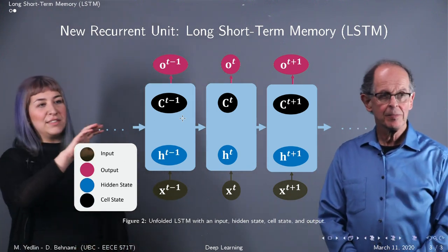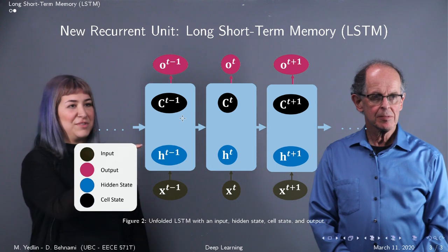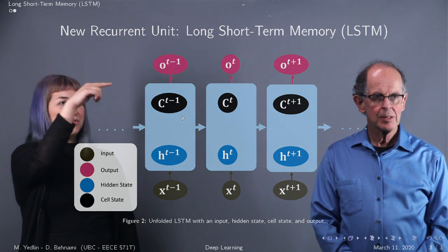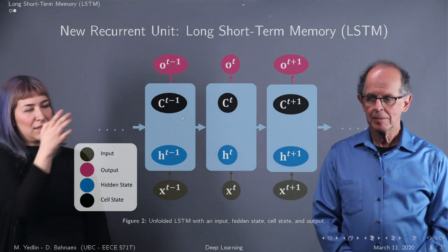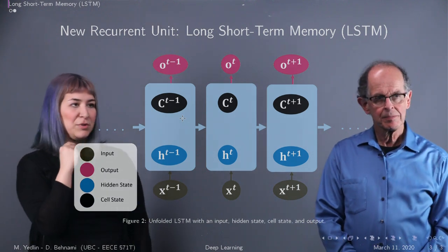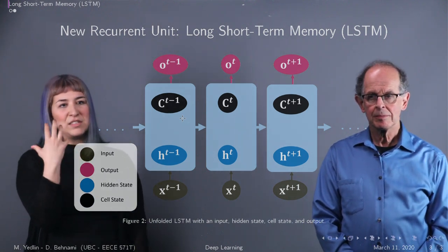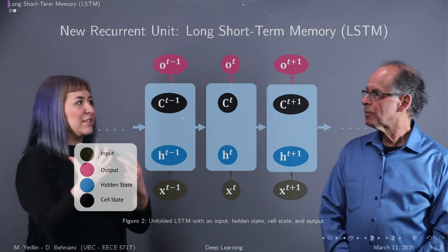At high level, in addition to the hidden state, which is right here, which we had before with the RNN, we introduced this other thing, which is a cell state, denoted by capital C here. Essentially, what it does is it works as the memory to the cell.